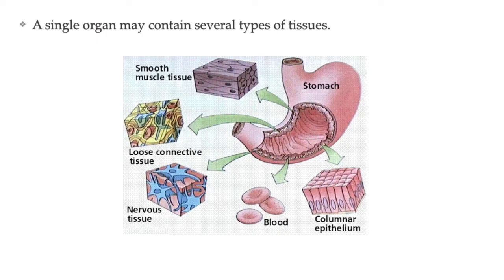An organ can be defined as a structure that is made up of two or more tissues working together on a larger scale to do a specific job within an animal's body. Examples of organs include the stomach, the brain, the heart, and the lungs.